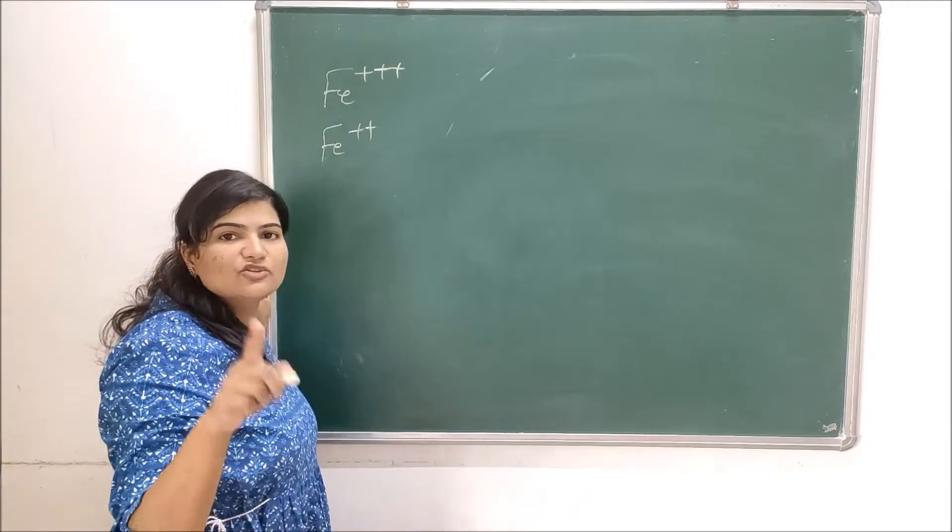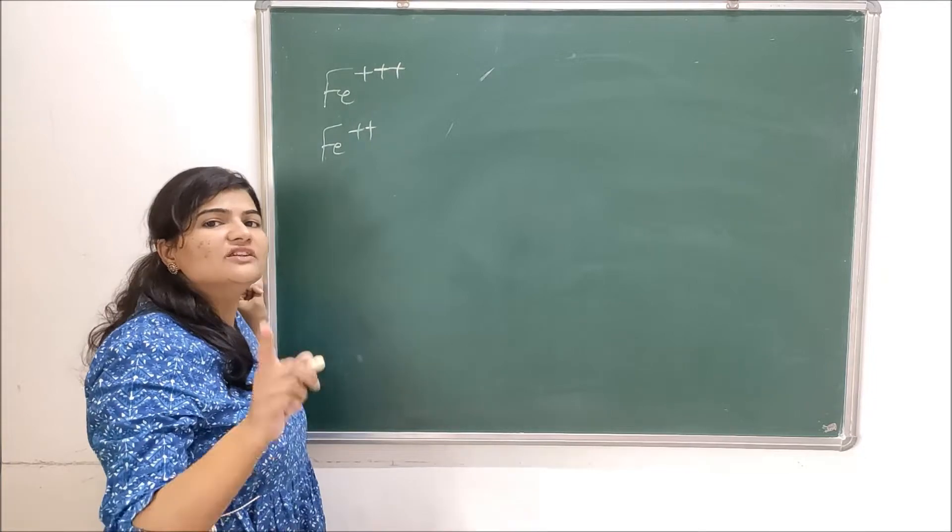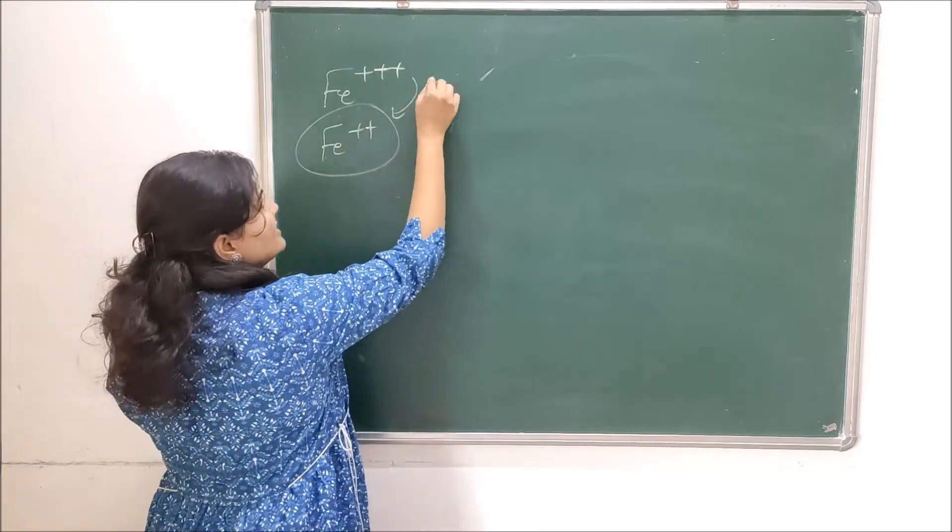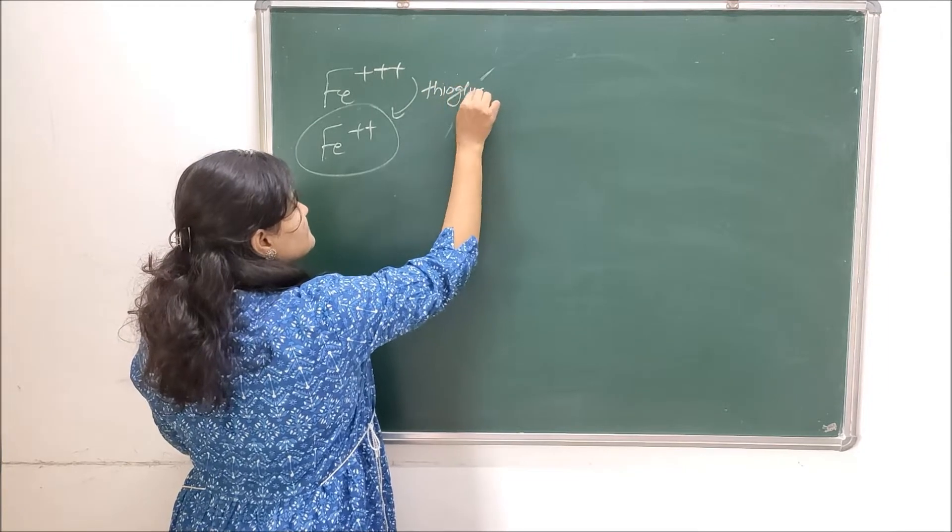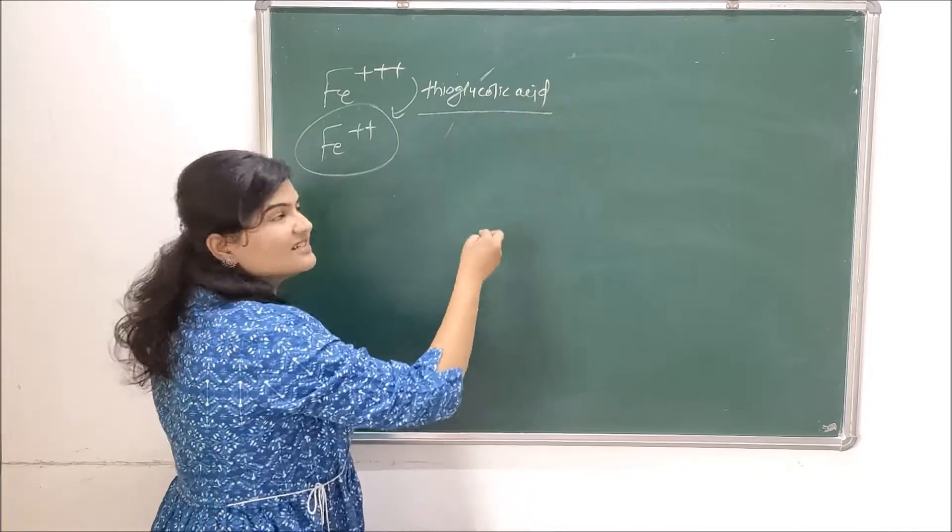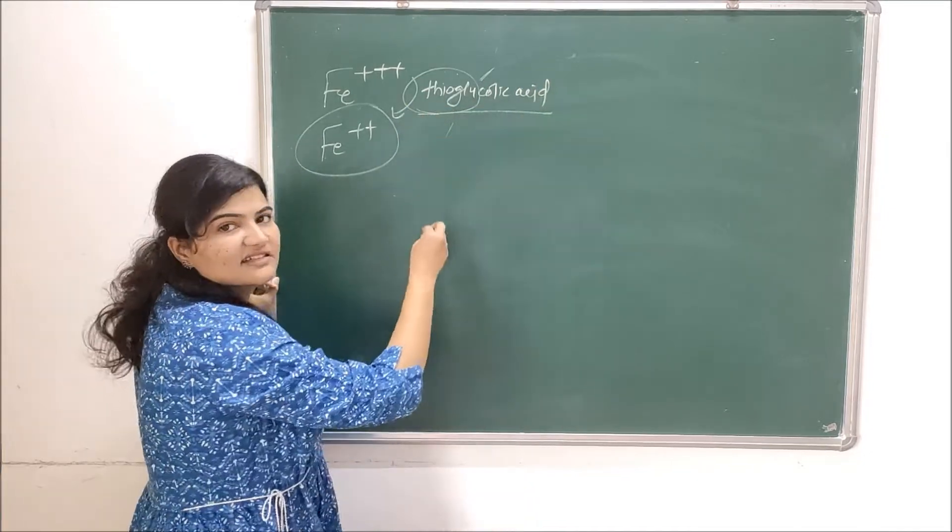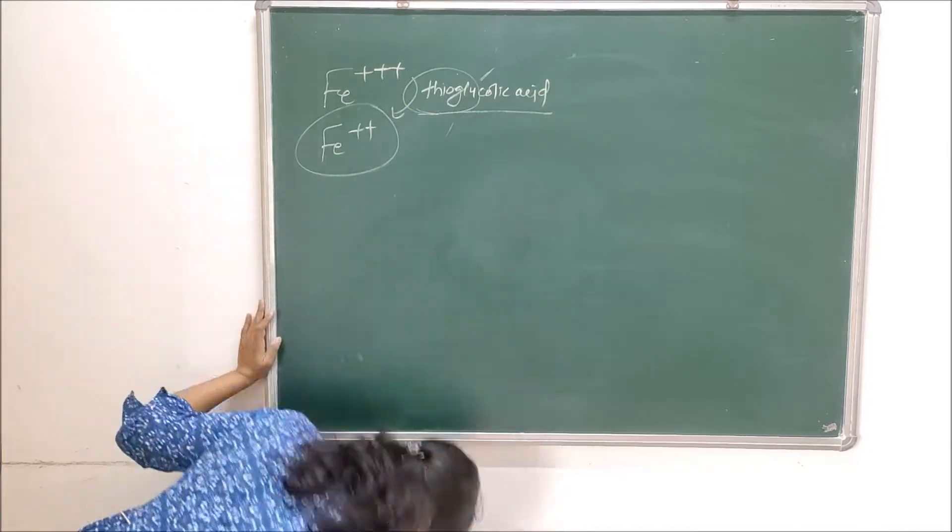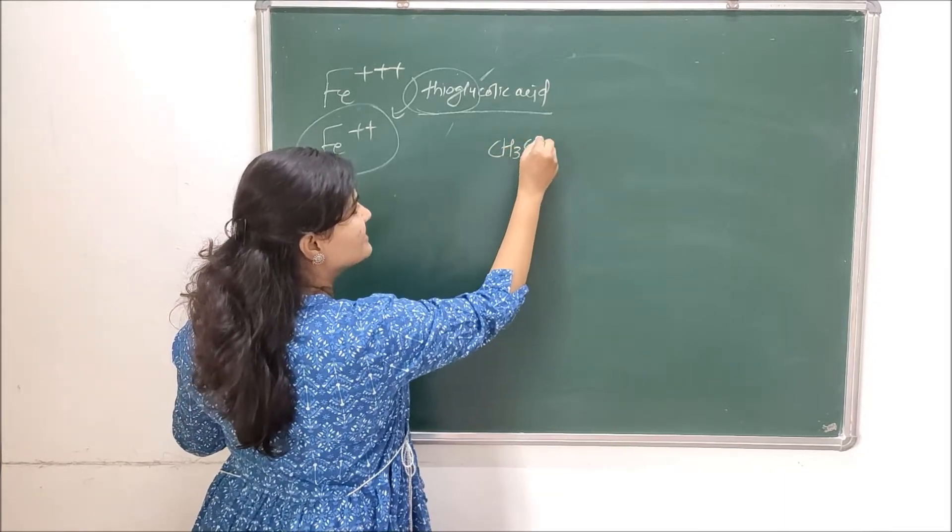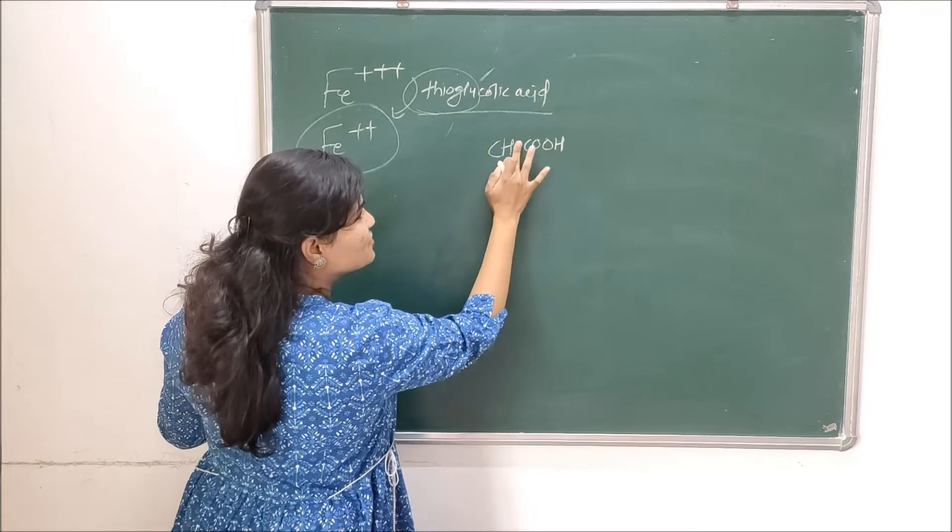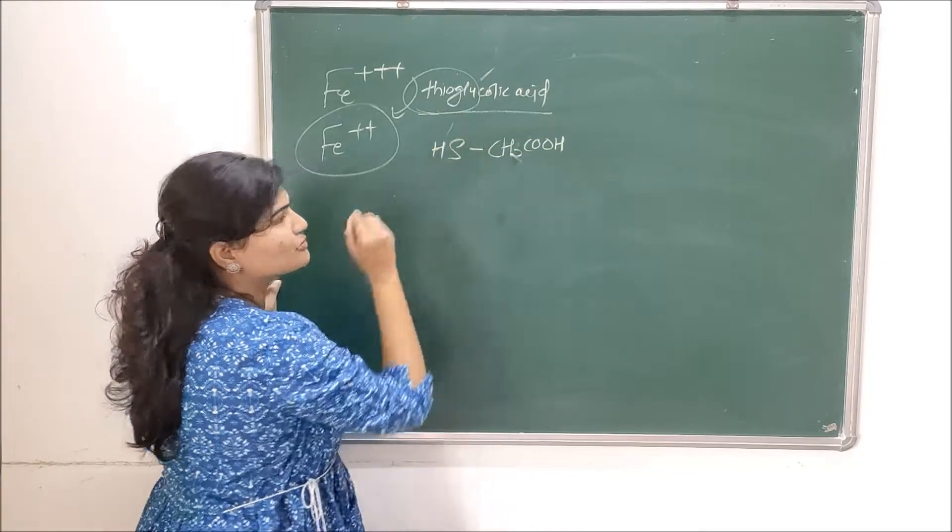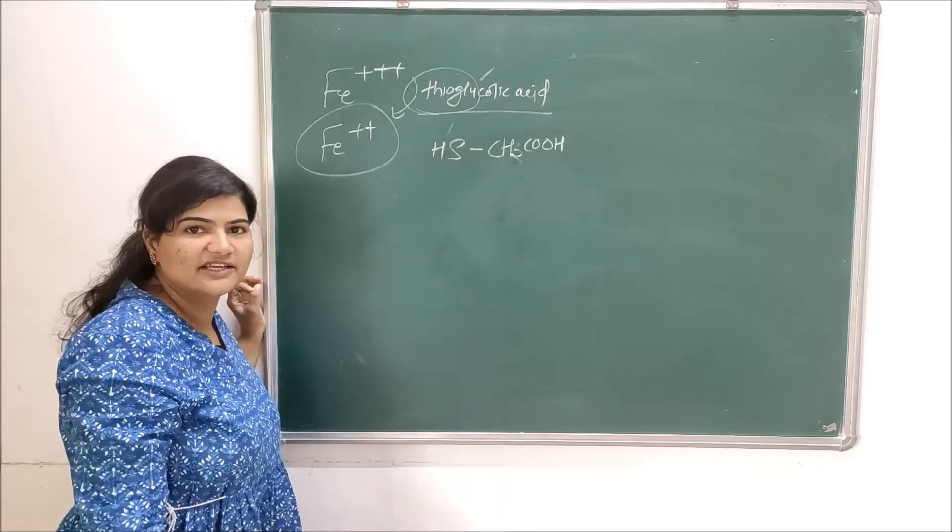Now ferric or ferrous, whatever oxidation state your iron may be in, it will be ultimately reduced to ferrous by your thioglycolic acid. What is the formula for thioglycolic acid? It is acetic acid of which one hydrogen is replaced by thiol group.